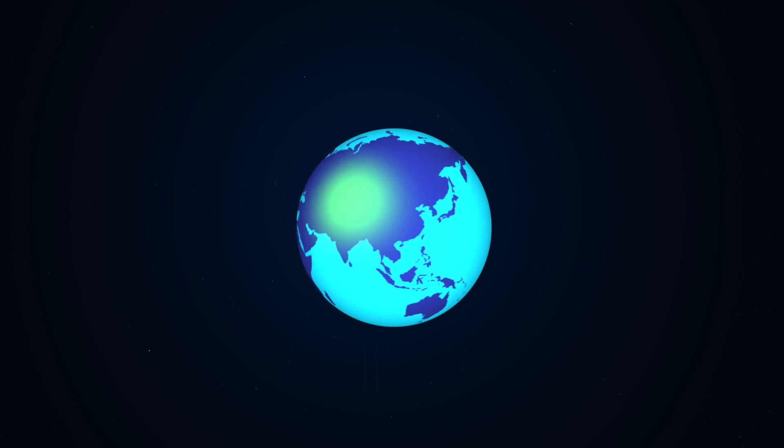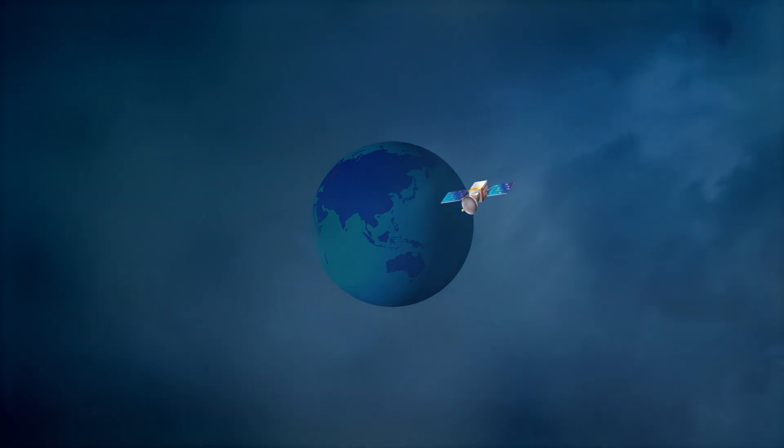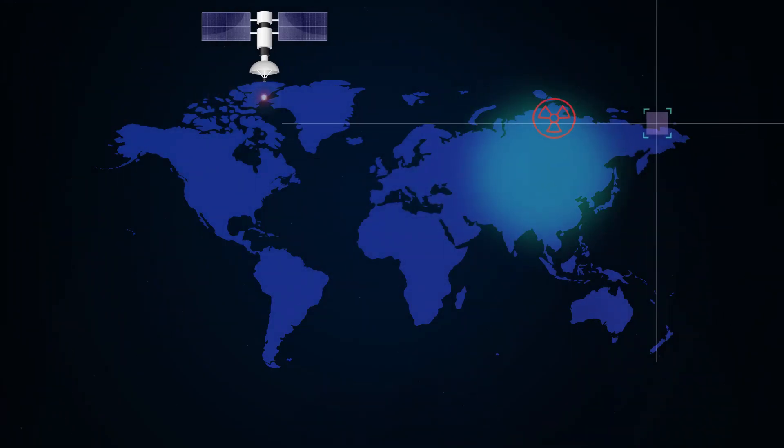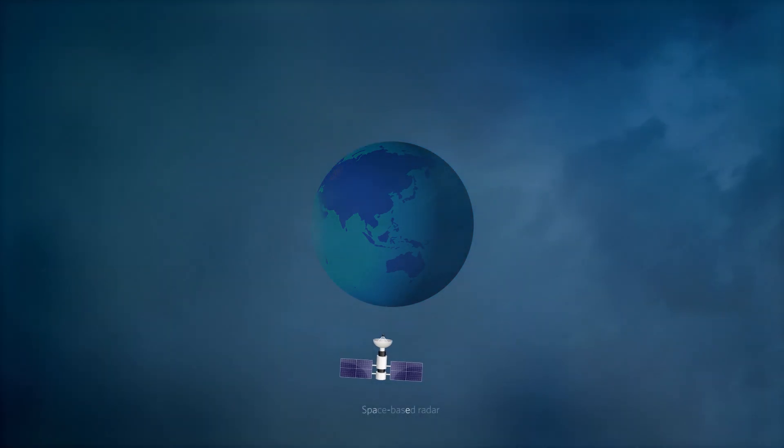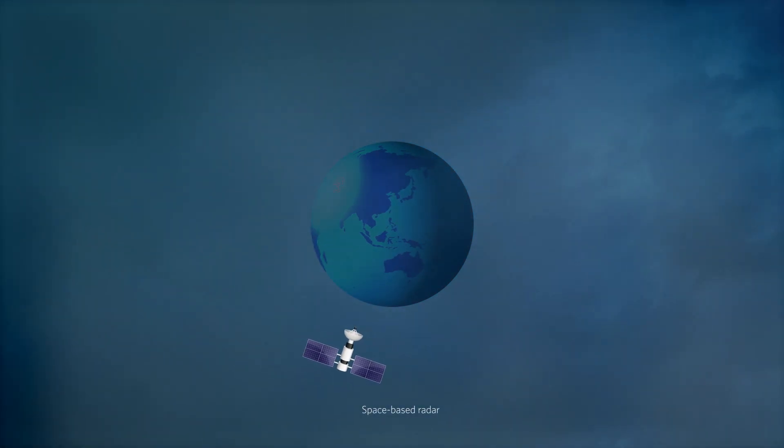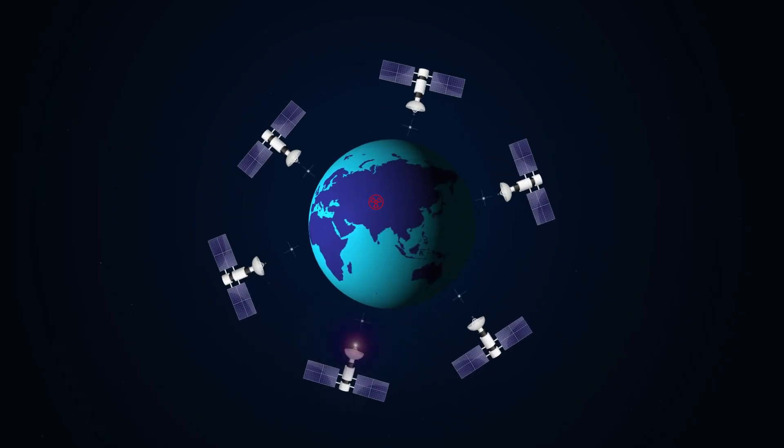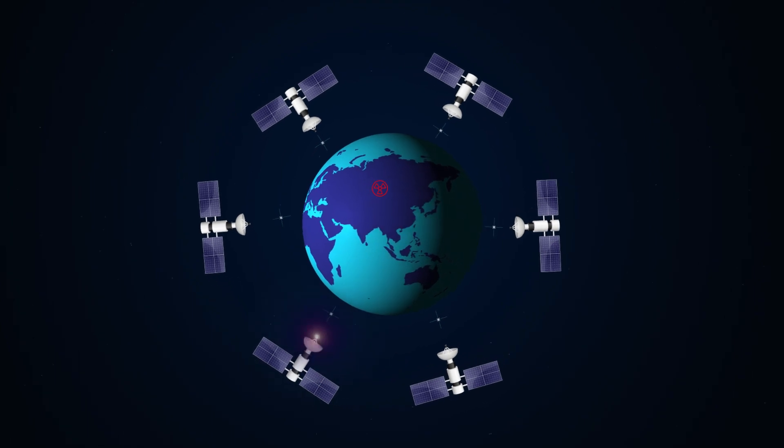This poses some practical challenges for the seeker. Clouds can block observations. Optical sensors also don't work well at night. The seeker could use space-based radars, which don't rely on light and can see through clouds. But satellites are constantly in motion. The seeker would need many radar satellites in orbit to gain full coverage.